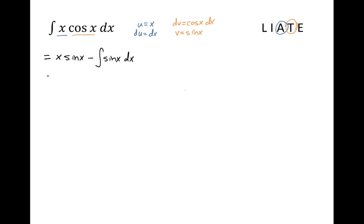So we go to the next step. This is equal to x sine x minus the antiderivative of sine x, which is negative cosine x.